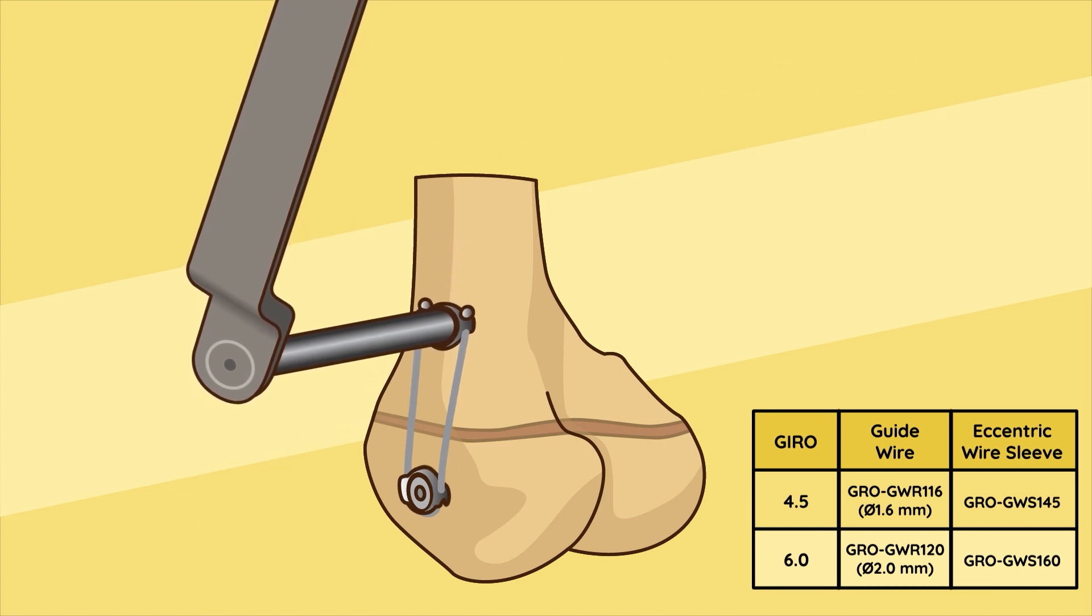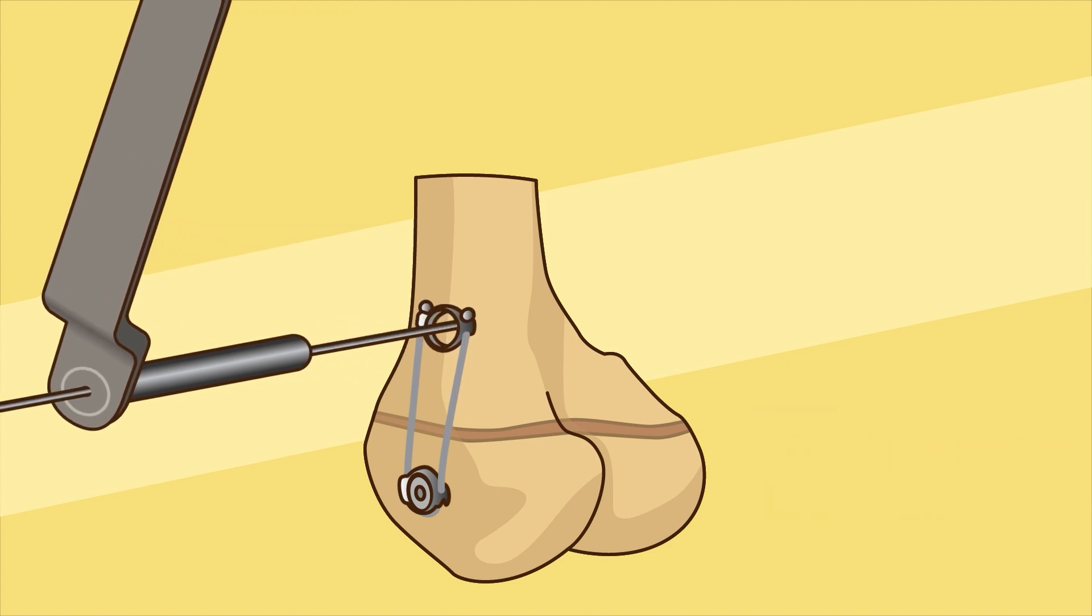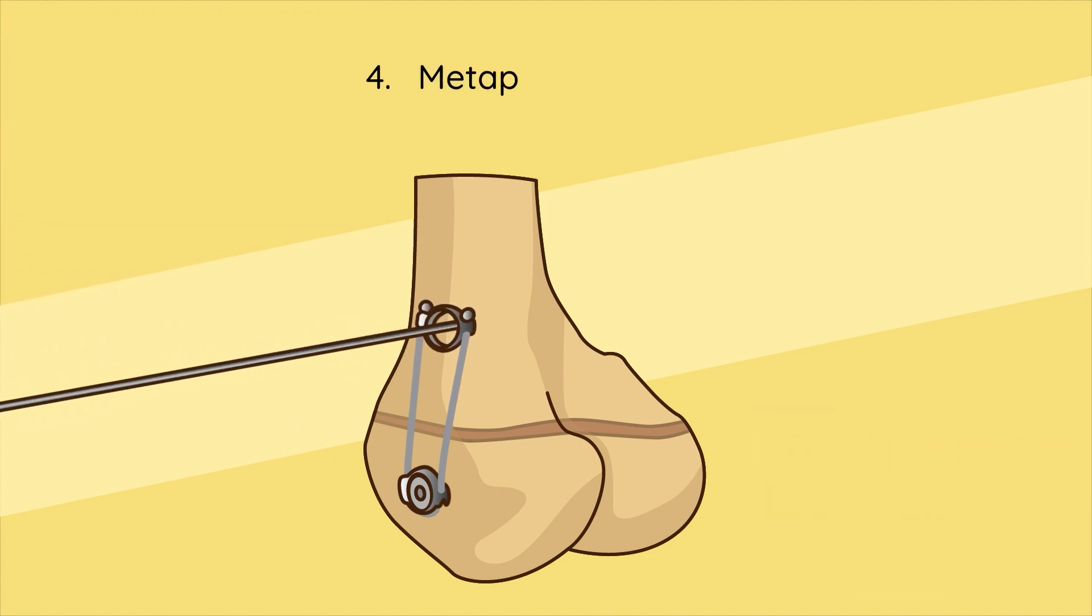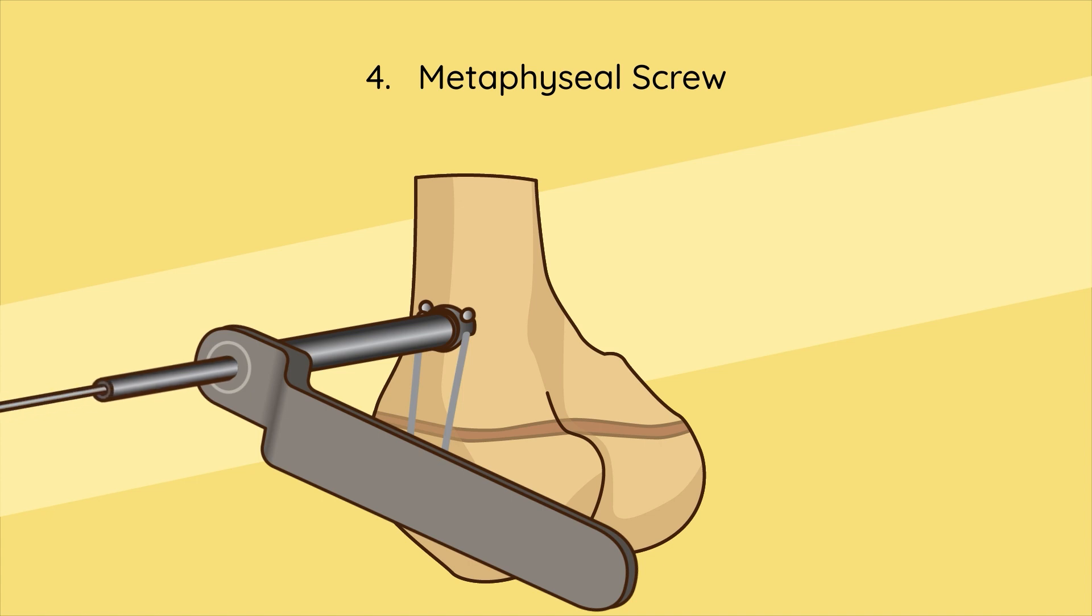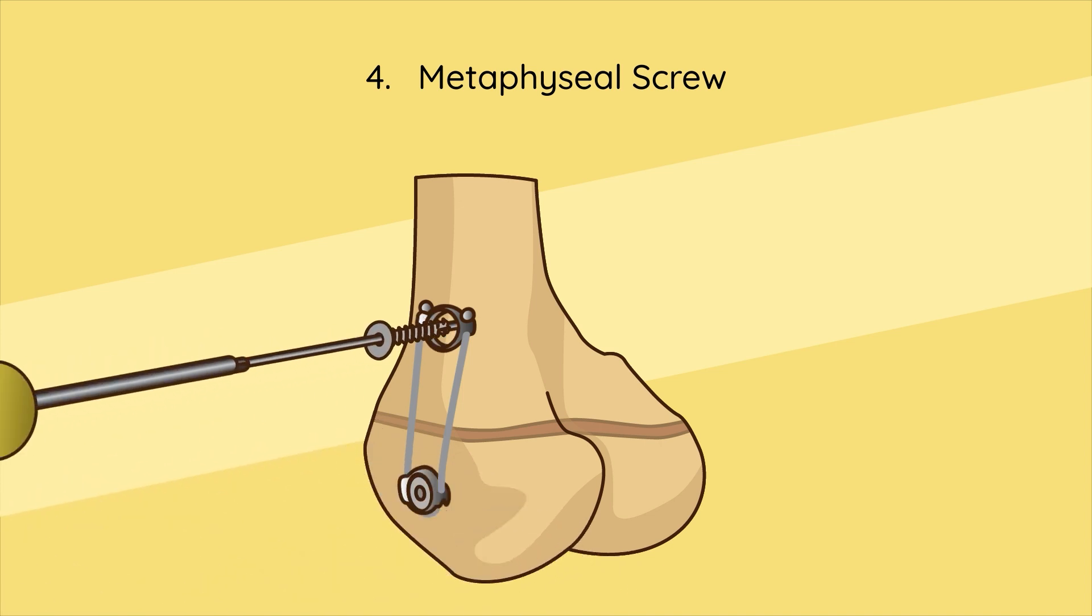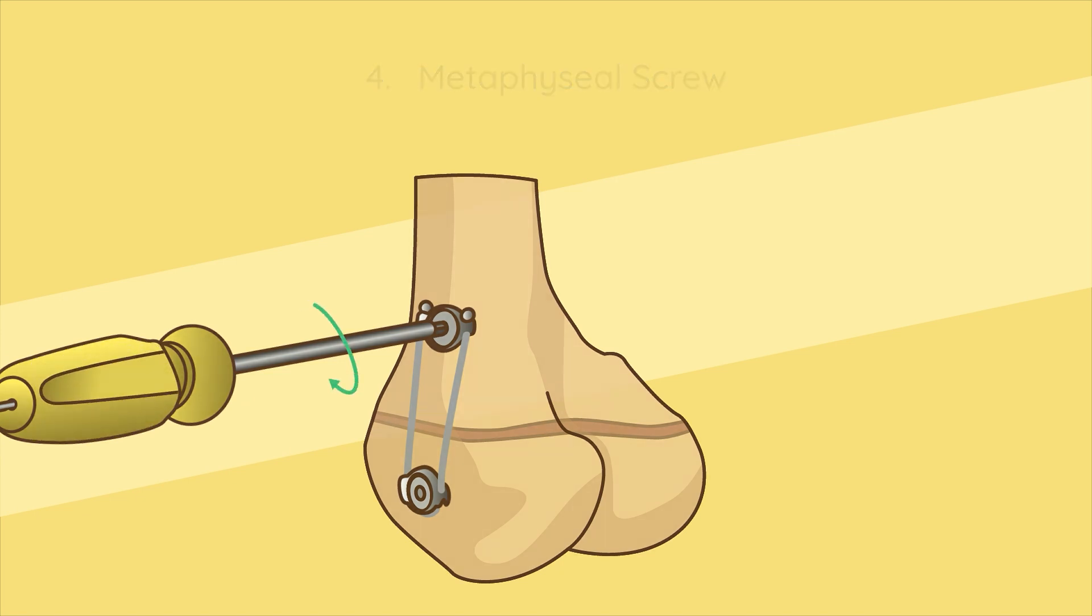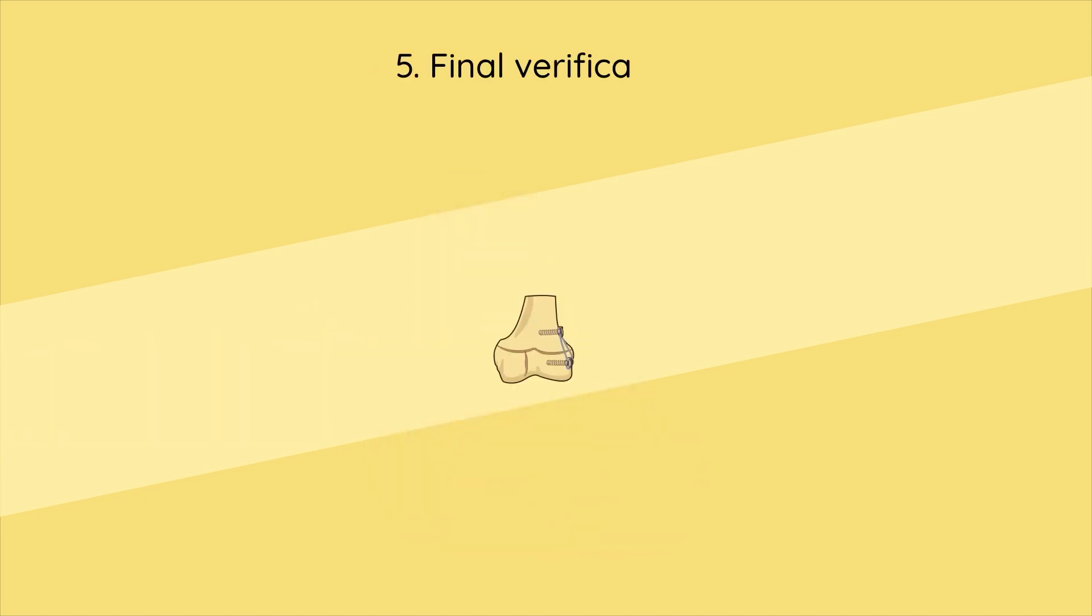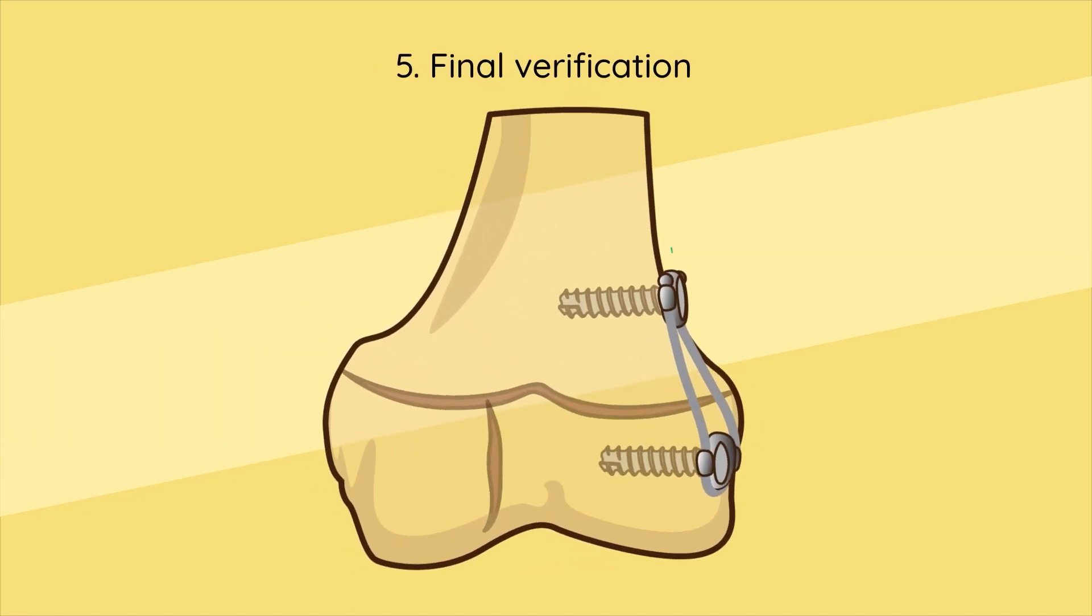Step four - metaphyseal screw: Drill the metaphyseal hole using the appropriate cannulated drill and insert the screw. Step five - final verification: Ensure proper seating of couplings over the bone surface, avoiding periosteal damage, and check screw final position before closing the incisions.